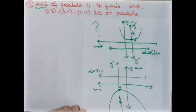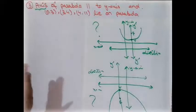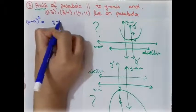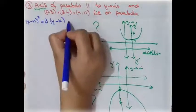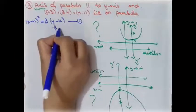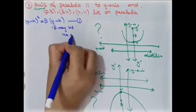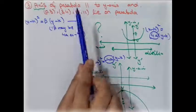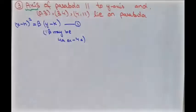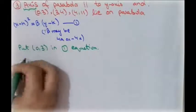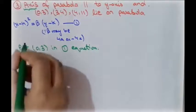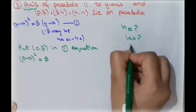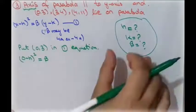The equation to use is (x - h)² = beta(y - k), where beta may be 4a or -4a — this is our first equation. We have three unknowns: h, k, and beta. Since three points lie on the parabola, they must satisfy this equation, so we substitute each point to generate three equations.